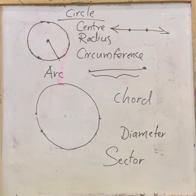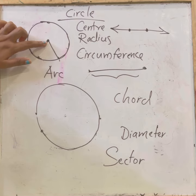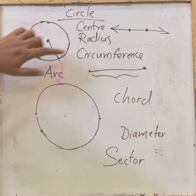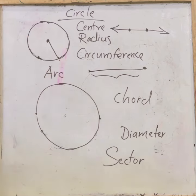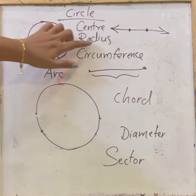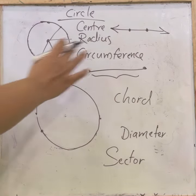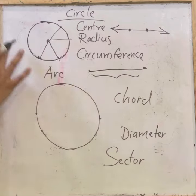Namaste. Today we will learn the 10th chapter, that is circles. First we will recall some points from the previous classes. Coming to circle, this is the center of the circle. The radius is the line drawn from the center to any point on the circle. There are infinite numbers of radii in a circle.